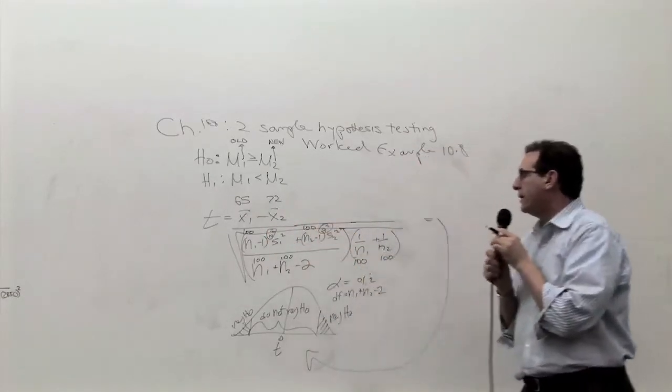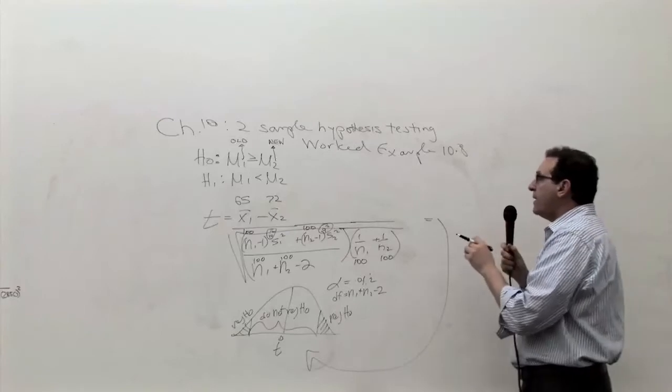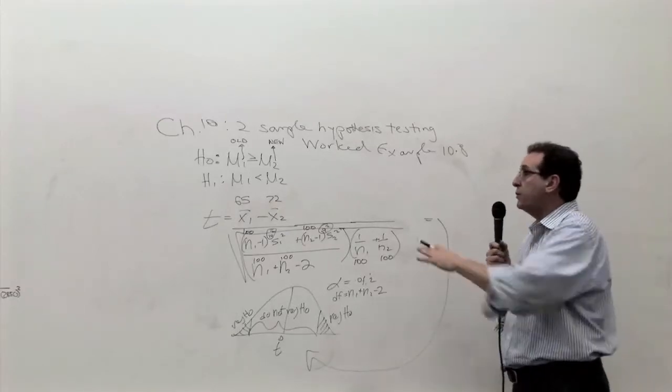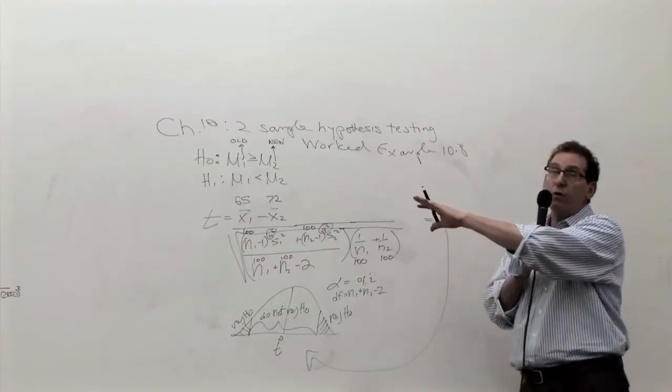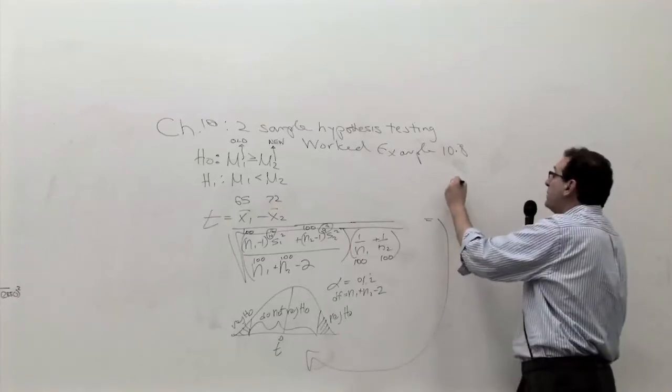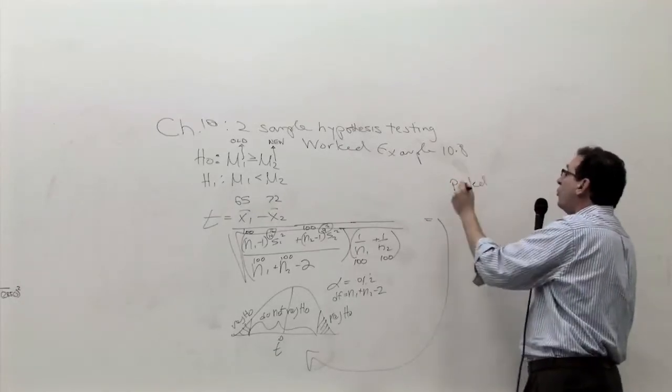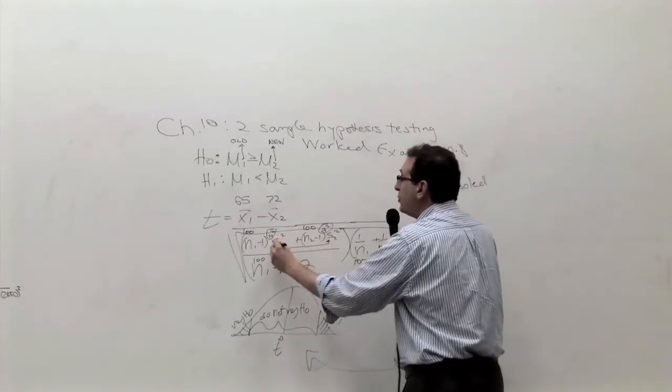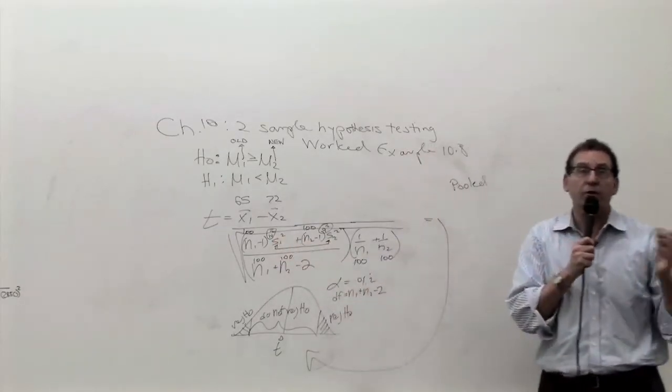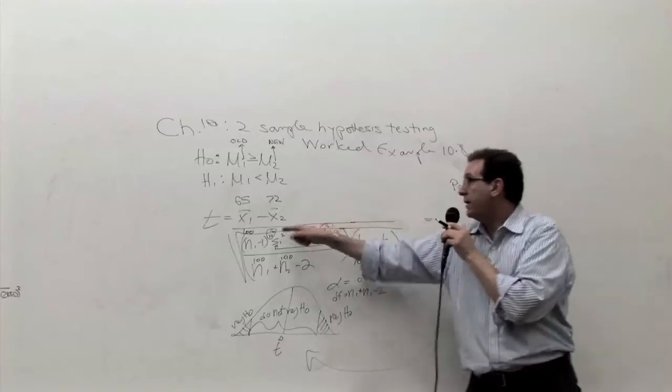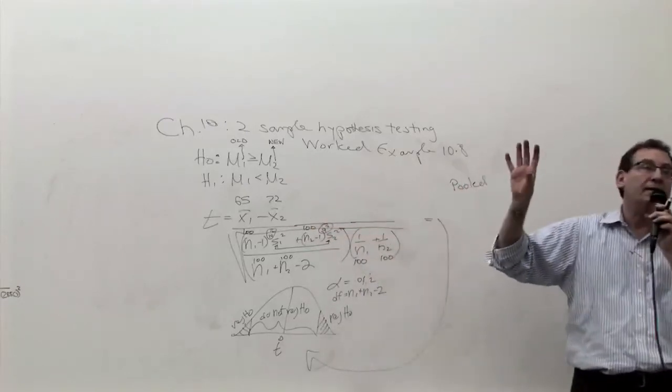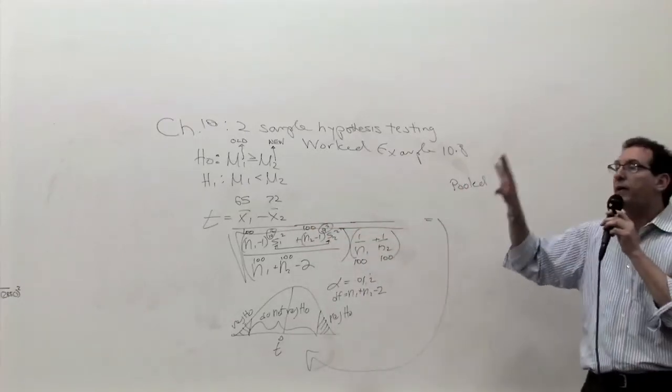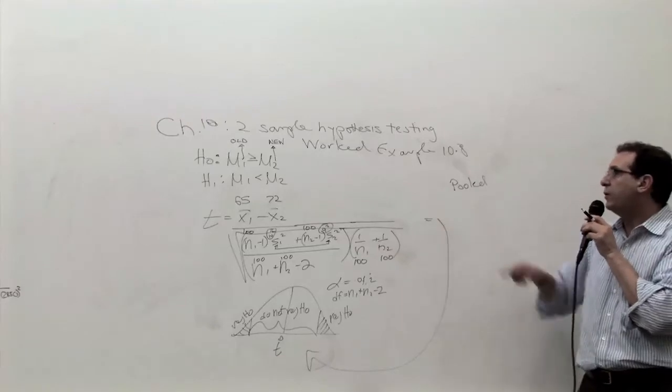And also remember that one of the assumptions that we're making here, you have to read the assumptions of the chapter because there are six or seven versions of the formula. This particular formula is pooled, meaning that these two numbers are sort of averaged together, and you can only average things that are similar. You can't average apples and oranges. So this is 9, this is 10. There are formulas to determine how similar they are, but just be aware they have to be somewhat similar to use this formula.